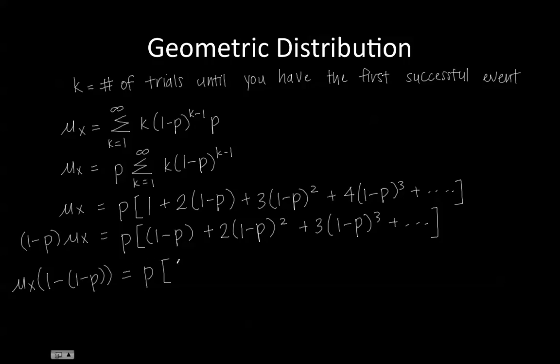And we'll get 1 minus 0 is 1, 2 times 1 minus P minus 1 minus P equals 1 minus P, 3 times 1 minus P squared minus 2 times 1 minus P squared equals 1 minus P squared plus 1 minus P cubed, and so on.